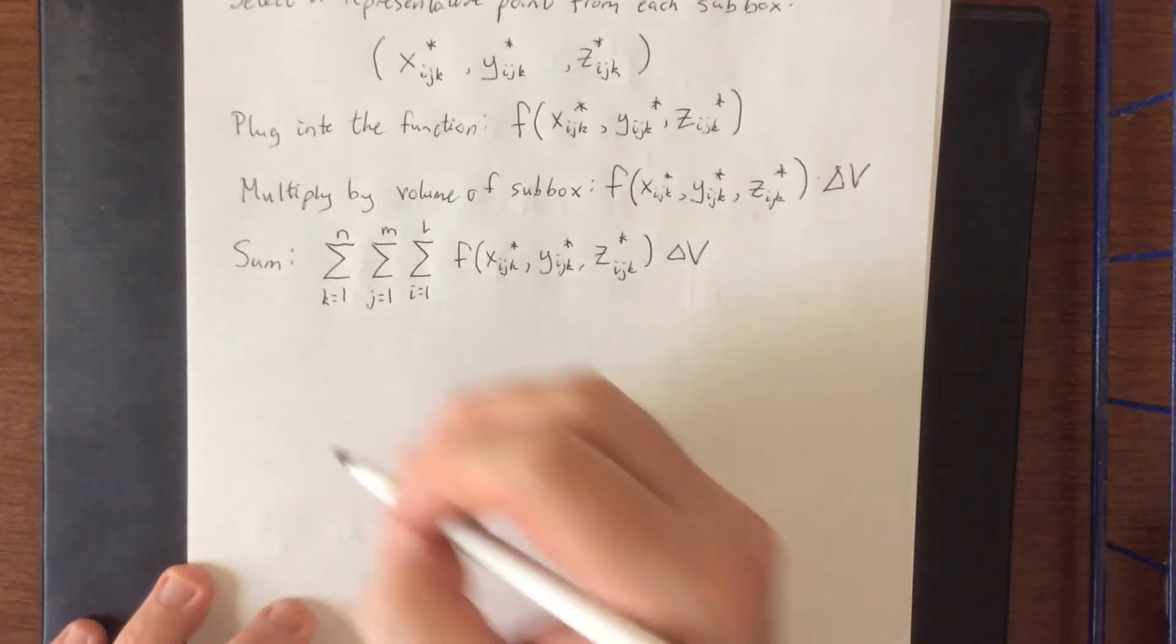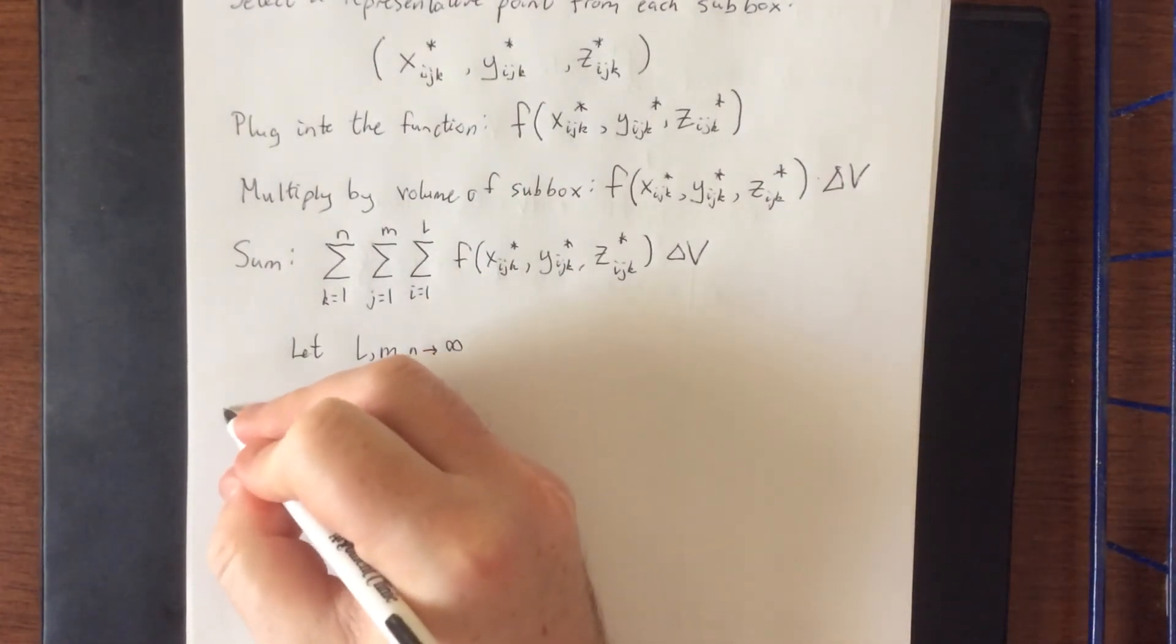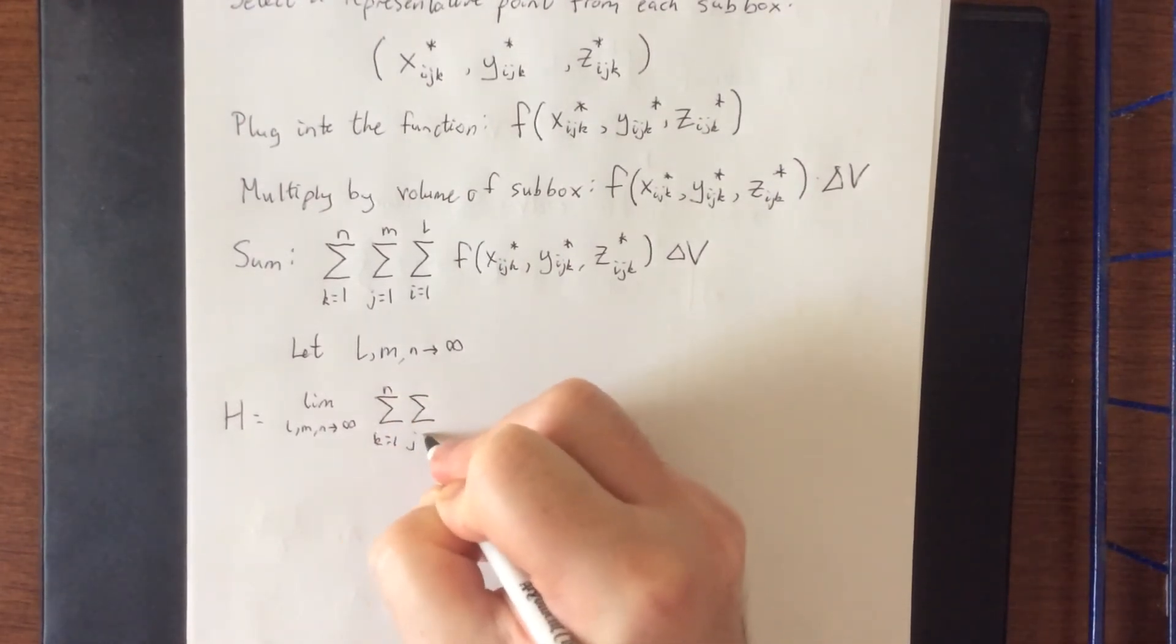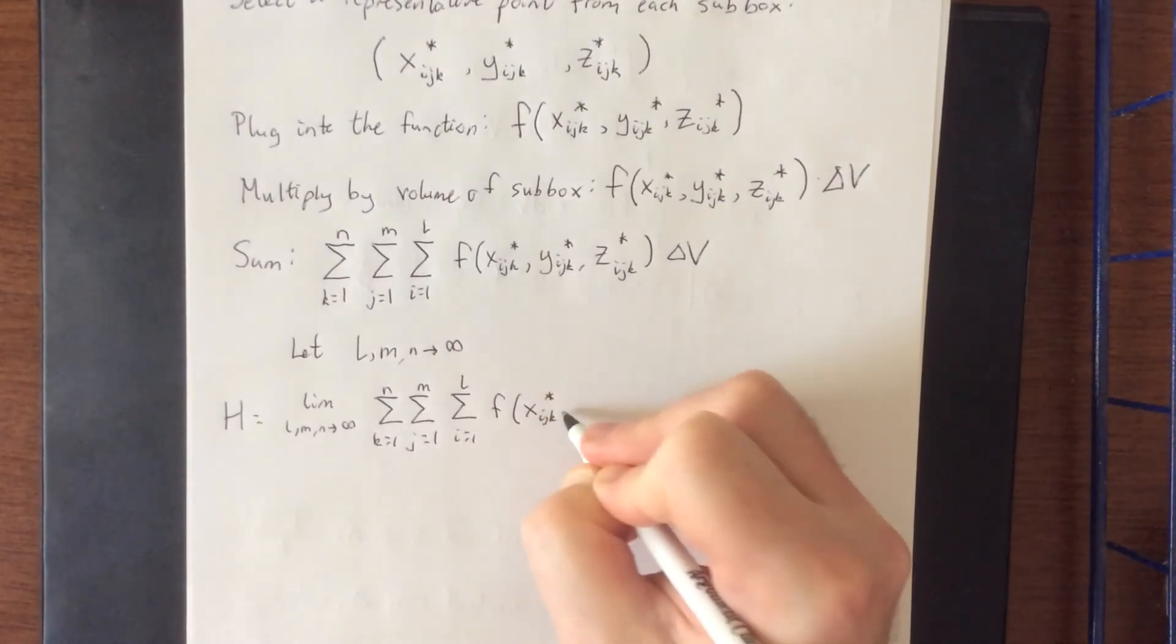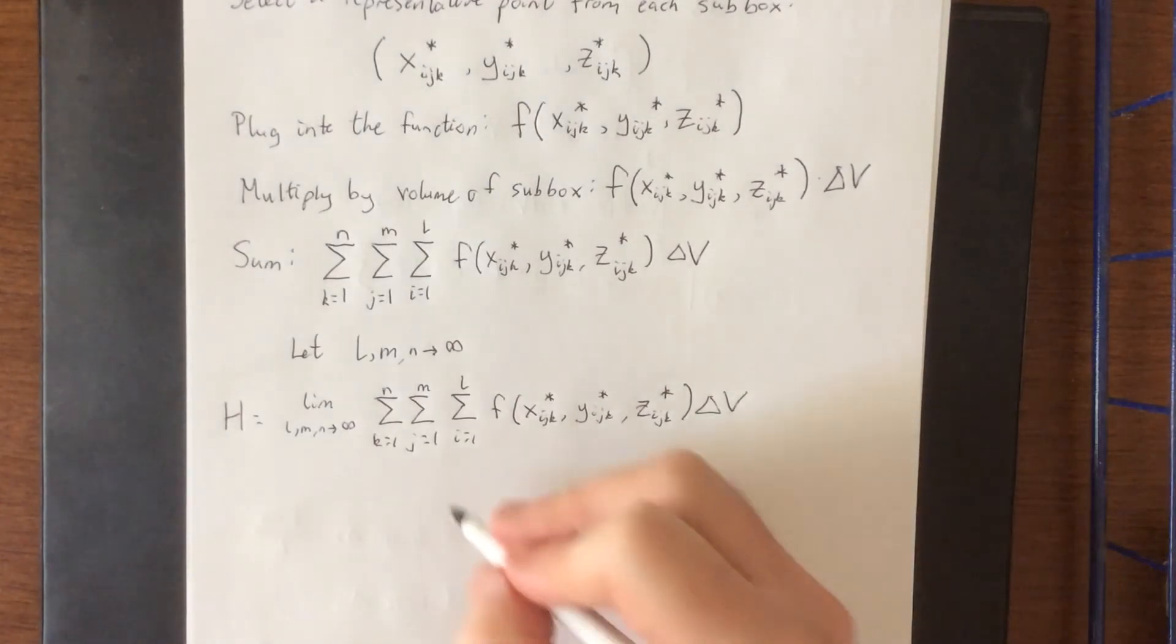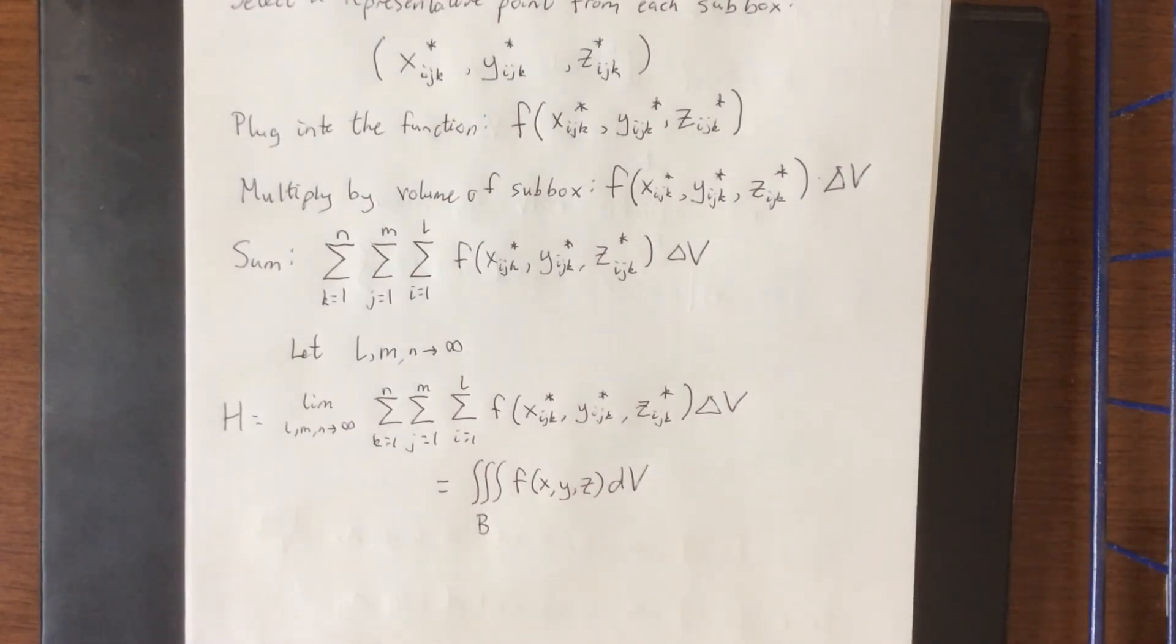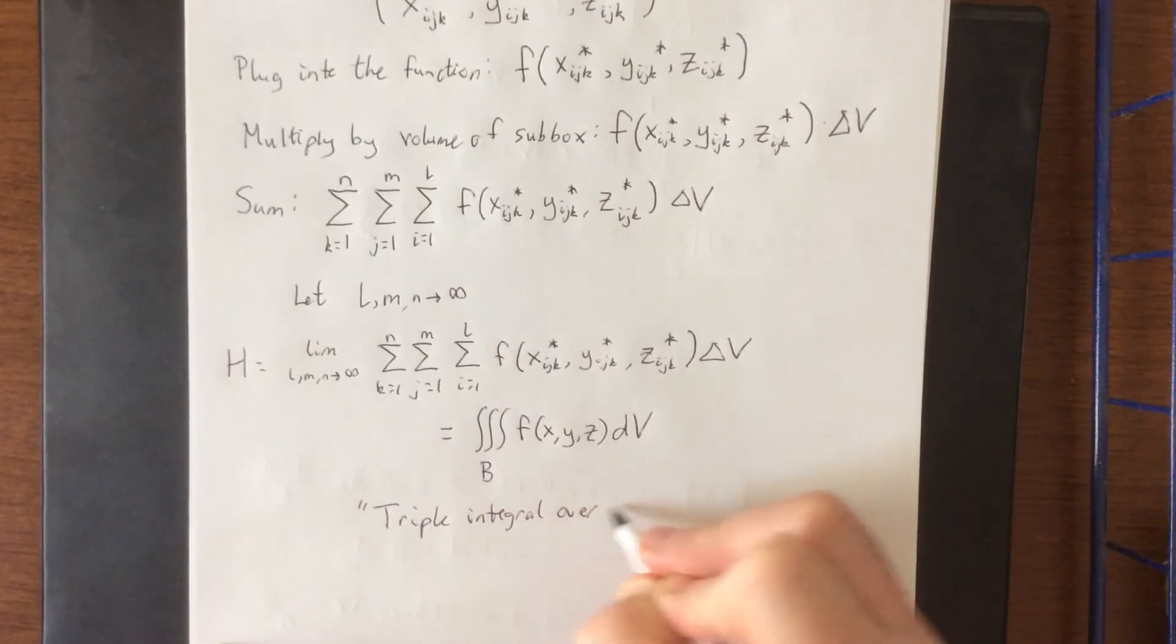Then to get the best possible hypervolume in all of this, we are going to let l, m, and n all go to infinity. So what we wind up with is the total hypervolume is equal to the limit as l, m, and n all go to infinity of the triple summation that we just set up: f of x sub i,j,k star, y sub i,j,k star, z sub i,j,k star times delta V. This is defined as the triple integral over the box B of f of x, y, z dV.